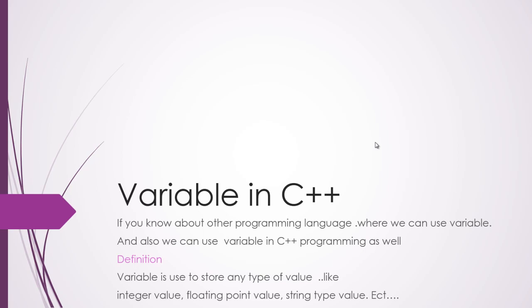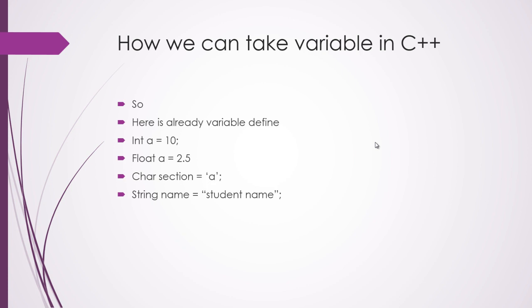Hi everyone, this is my fourth episode where we'll talk about variables in C++. If you know about other programming languages like JavaScript, PHP, or Python where we can use variables, you can also use variables in C++. A variable is used to store any type of value — like integer, floating point, string, or character value — whatever you want.